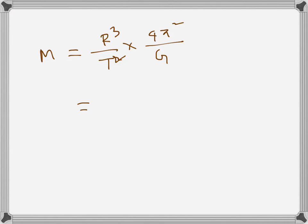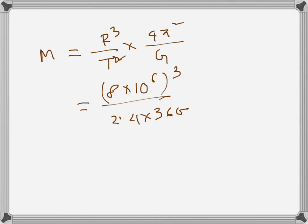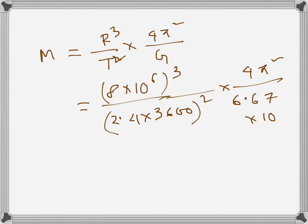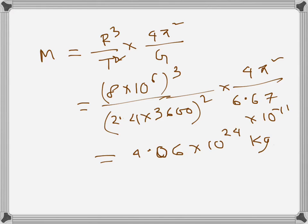Plugging in values: R = 8 × 10⁶ m, T = 2.4 hours converted to seconds (× 3600), and G = 6.67 × 10⁻¹¹. The result is M = 4.06 × 10²⁴ kg, which is the mass of the planet.